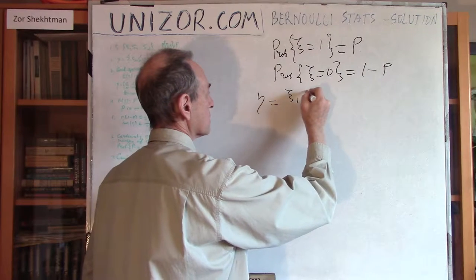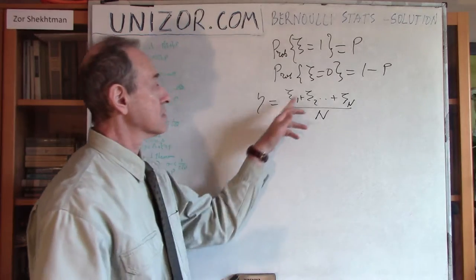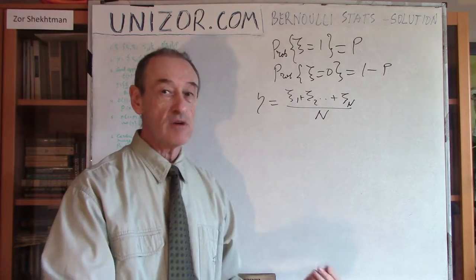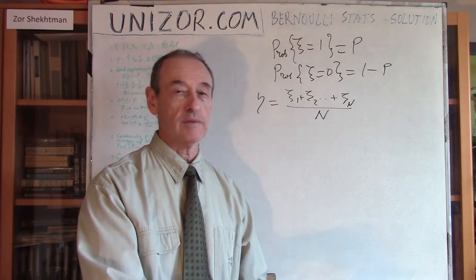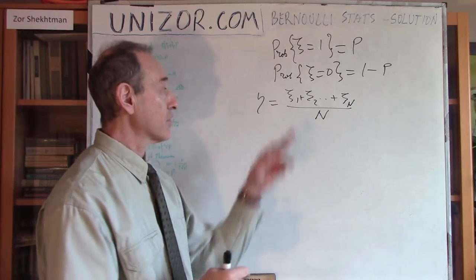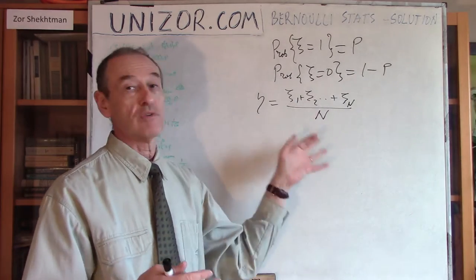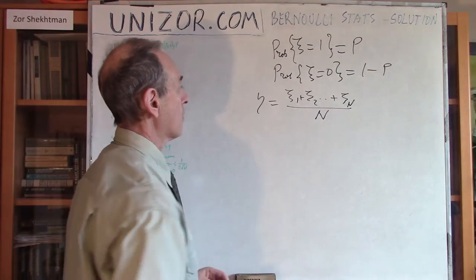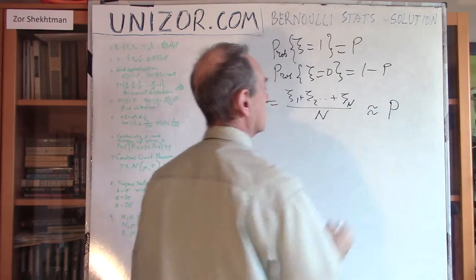I will use the letters ξ₁, ξ₂, etc. as results of N experiments, and η is their average. I understand that in one series of N experiments we get concrete constant values, but somebody else doing the same would have different numbers. We would like to put a mathematical foundation to the statement that the average, regardless of the result, would be close to p. That's why I approach this as a random variable with a certain distribution, which we would like to use as an approximation of the probability p.